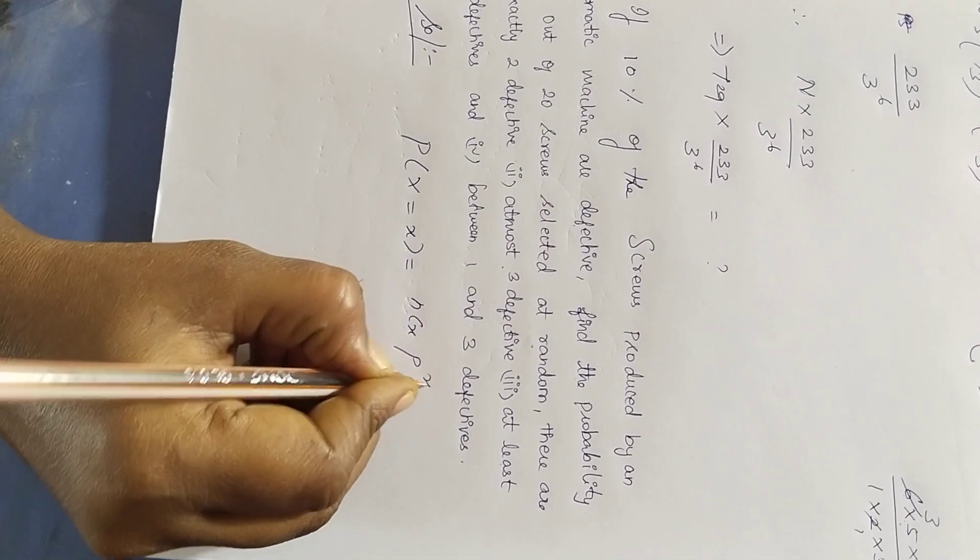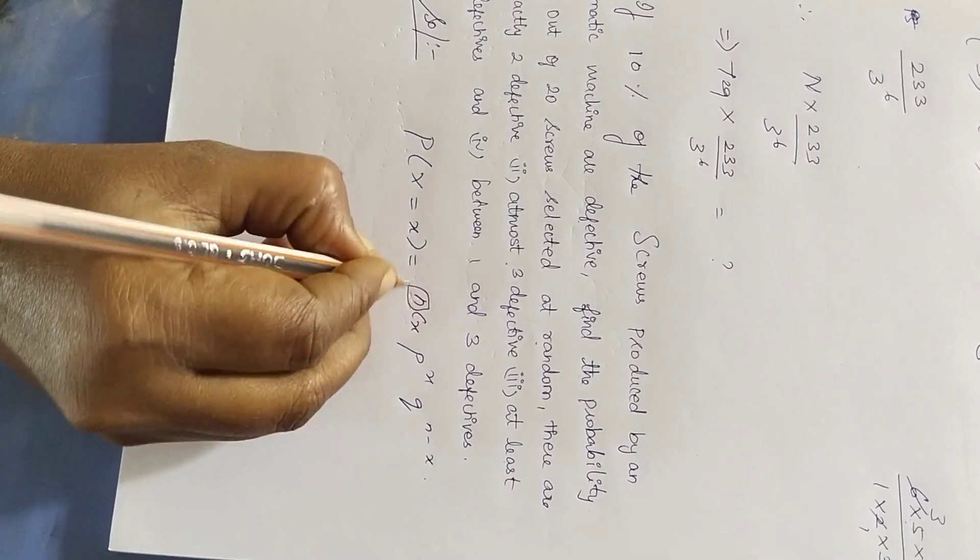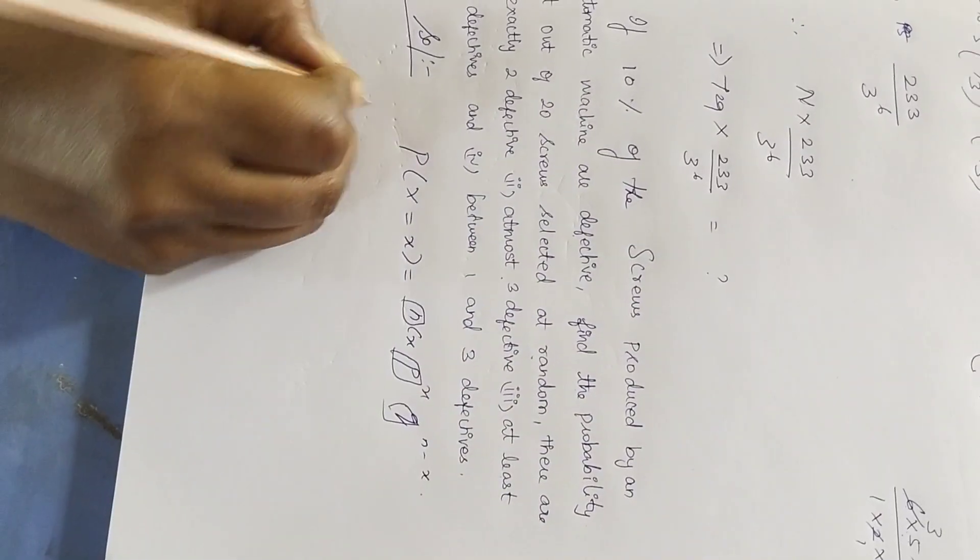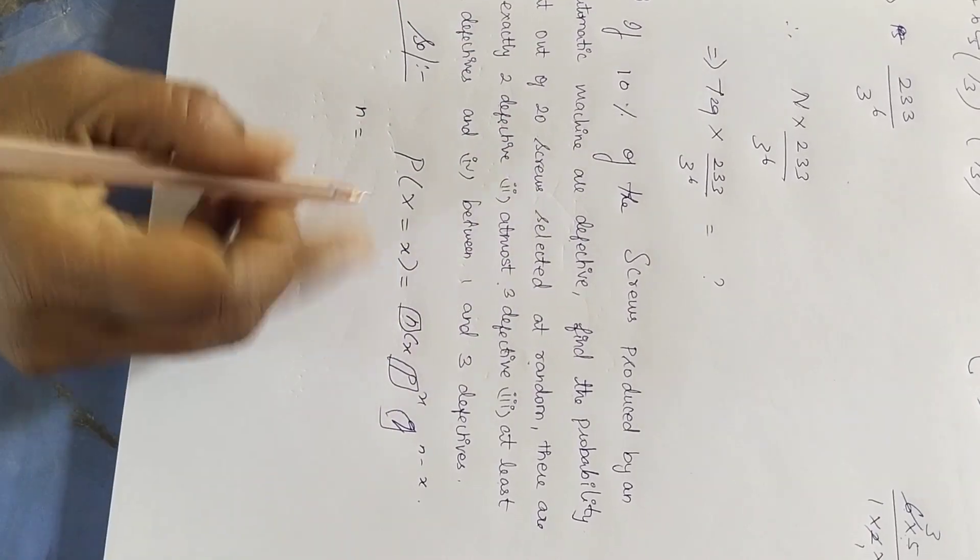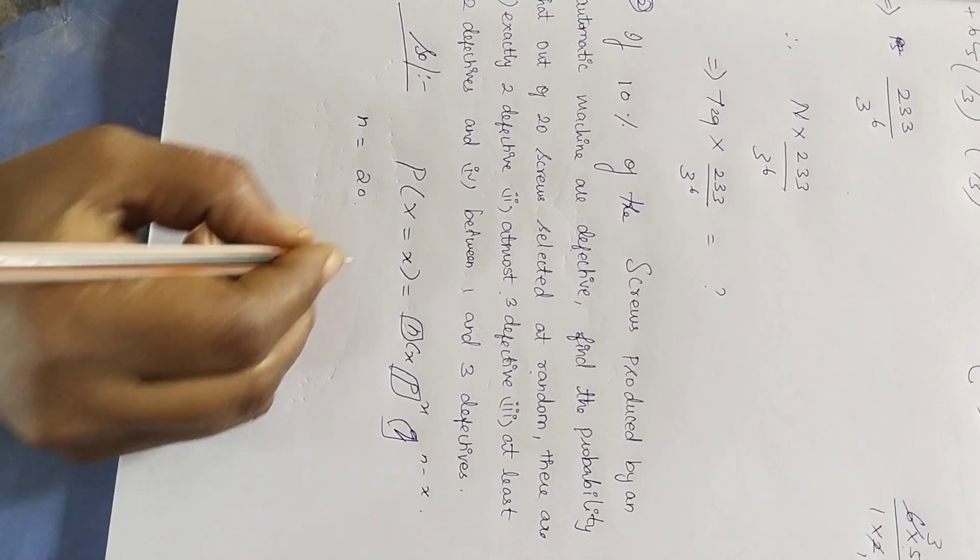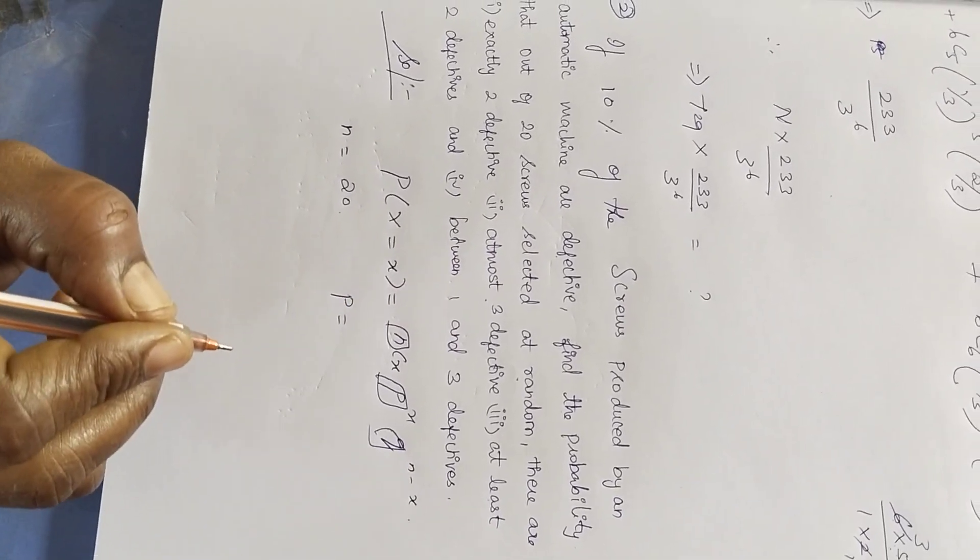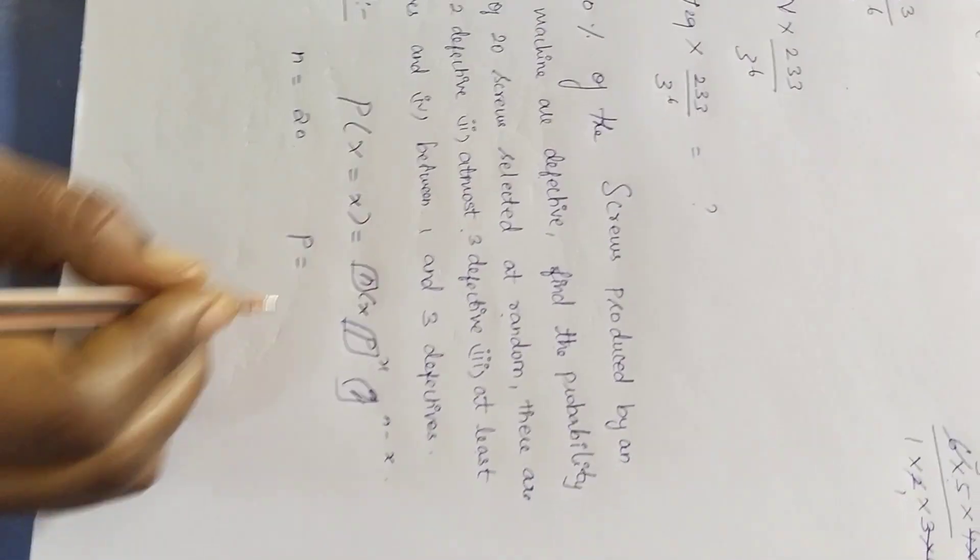Now, nCx, p power x, q to the power of n minus x. Now you can know n, p, and q. So n will tell you how many screws are random.